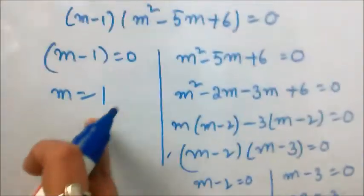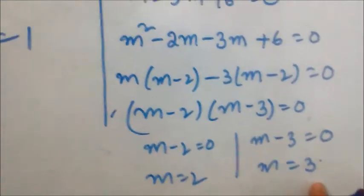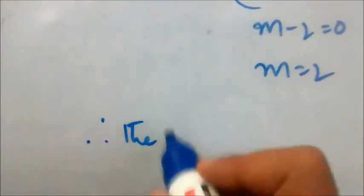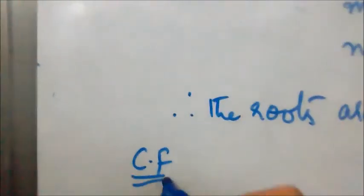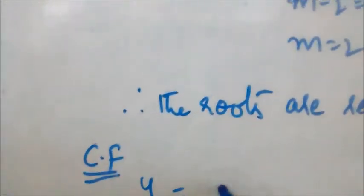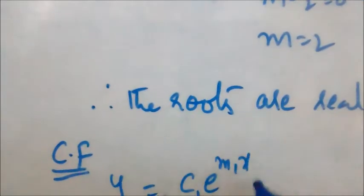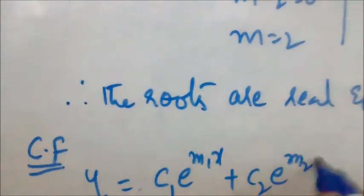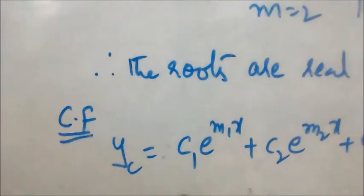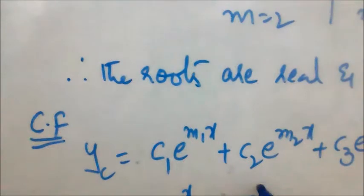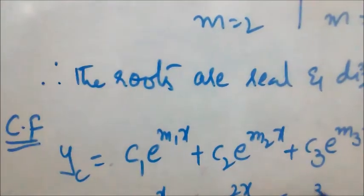The m values are 1, 2, and 3. The roots are real and different. Therefore, the complementary function is: y_c = C₁e^x + C₂e^(2x) + C₃e^(3x).